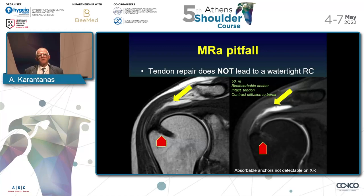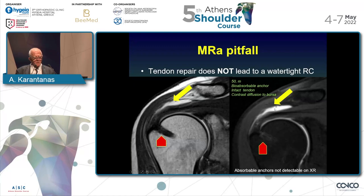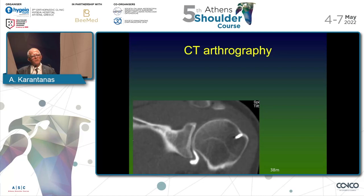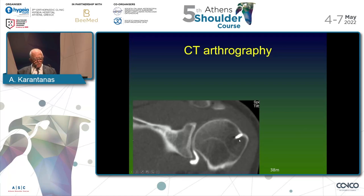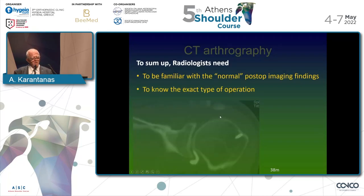Regarding MR arthrography, we perform arthrograms particularly in elite athletes who have undergone rotator cuff repair. You can see contrast entering the subacromial bursa, so tendon repair does not mean we have a watertight rotator cuff. CT arthrography may be used in patients who cannot undergo MRI due to claustrophobia, other contraindications, or because metallic components produce artifacts. The metallic anchor does not degrade image quality, and we see iodine in the axillary recess not escaping into the rotator cuff — a very good result.